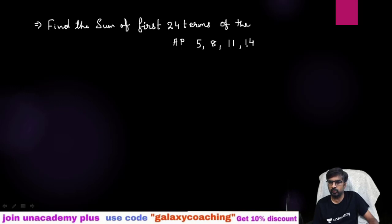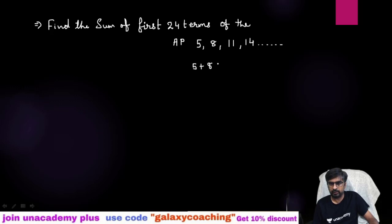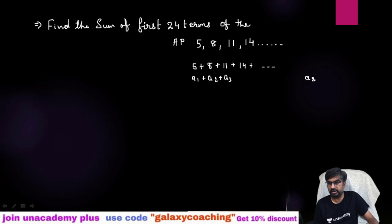Look here — one AP is given to you: 5, 8, 11, 14, and so on. They are telling us to find the sum of the first 24 terms. So actually what you need to do is find out the sum of these terms up to the 24th term — that means first term plus second term, then third term, and like that up to the 24th term. We are going to use a formula as a shortcut.